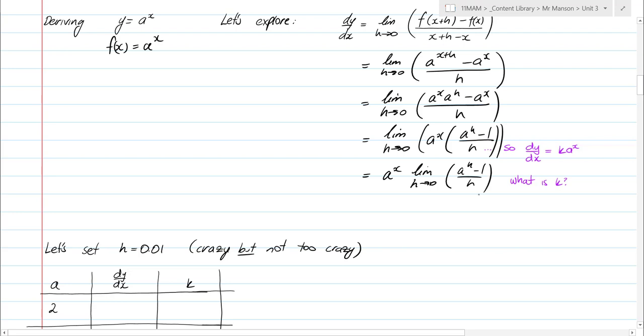We've got this limit h goes to zero and most of you are probably still grappling with how that works and why it works. But the key here is, the a^x has no h's in it. So as we explore the limit as h goes to zero of the a^x, it does nothing because there's no h's in it. So because there's no h's in it, I can take that out the front as a common factor. It's only the thing with h's in it that are affected by the limit. So I'm taking it as a common factor.